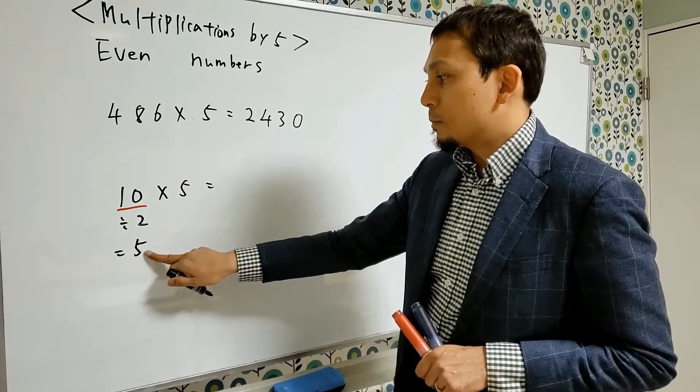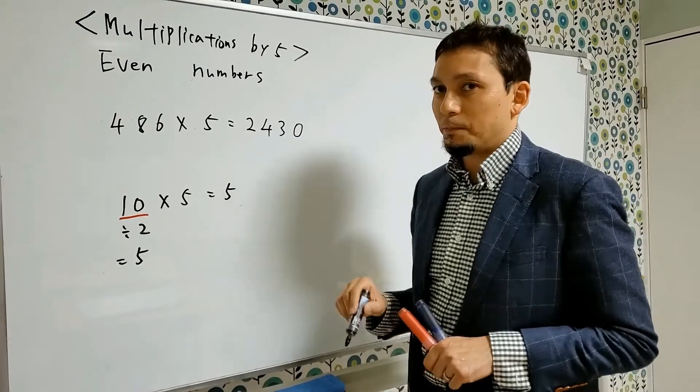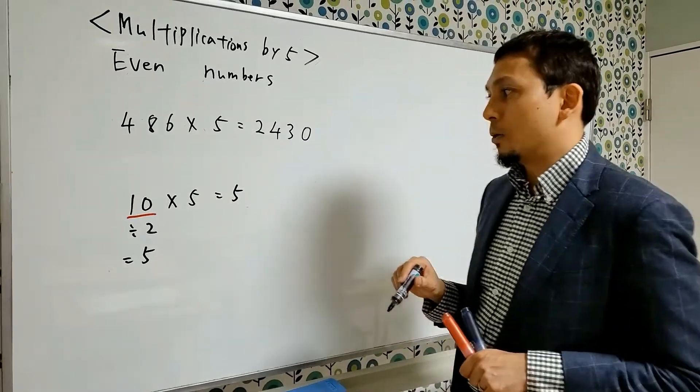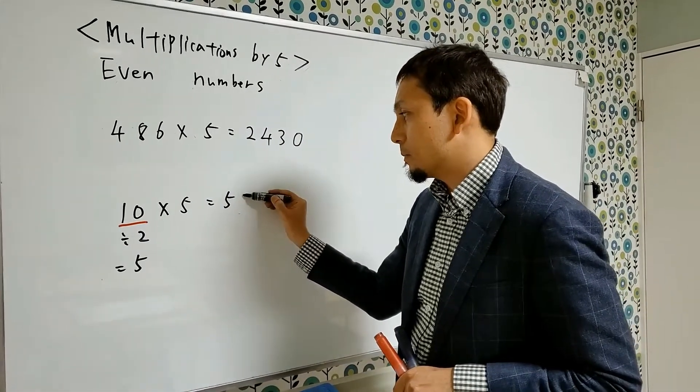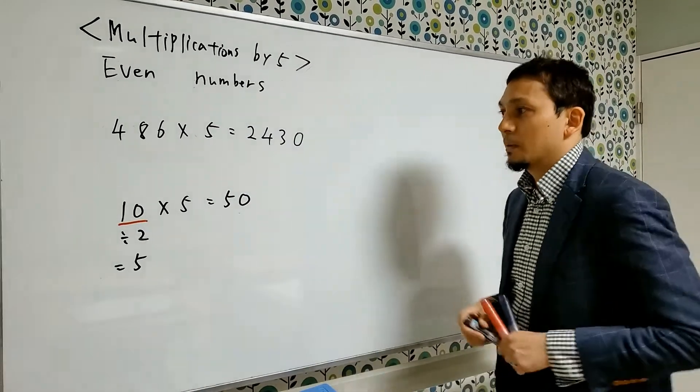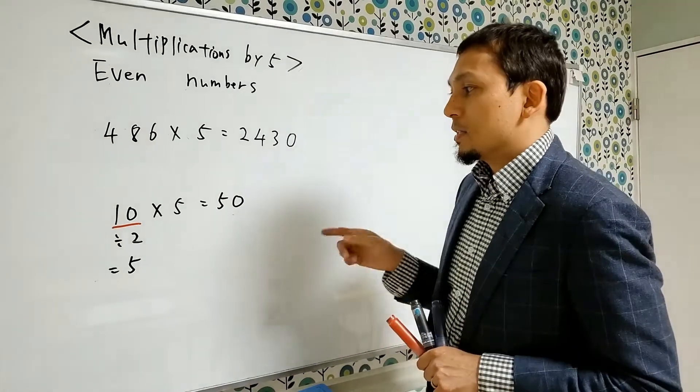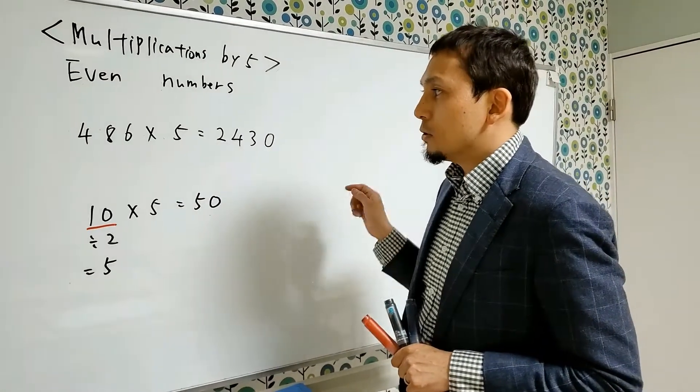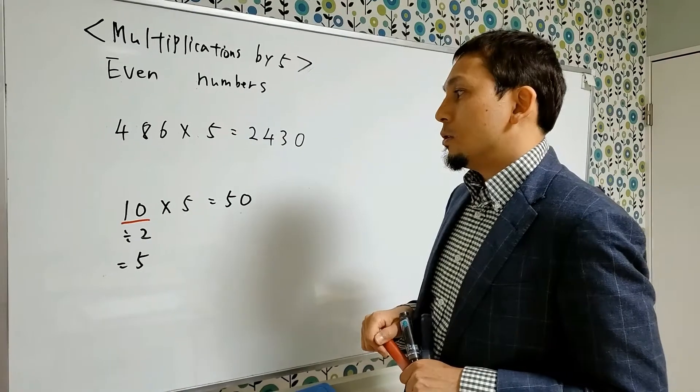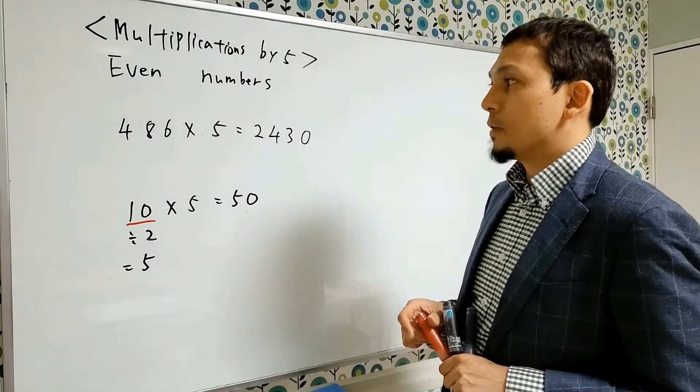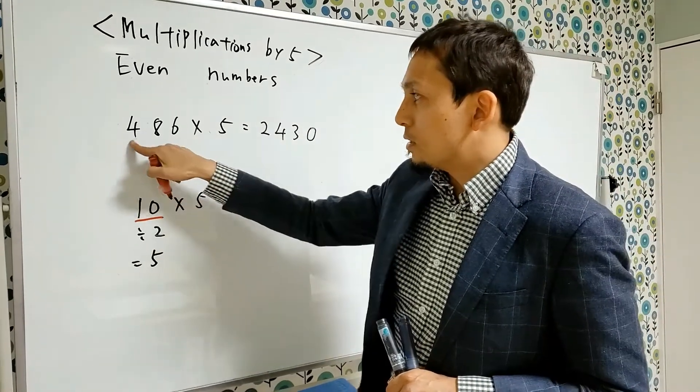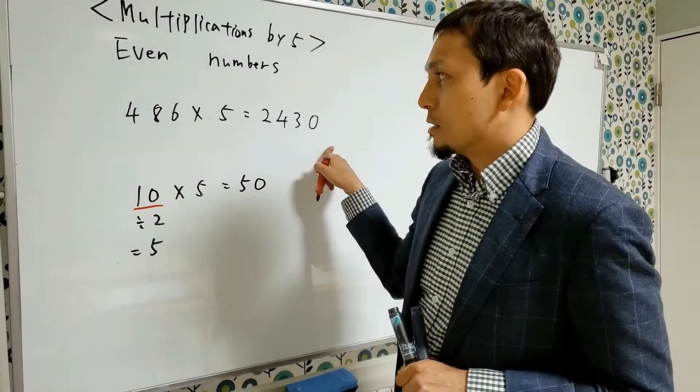Now, write this number 5 here. After that, all you need to do is just to write the number 0 next to it. Here. That's all the procedure you need to do. So actually, you can apply this method to other multiplications by 5. So let's confirm using this number sentence.